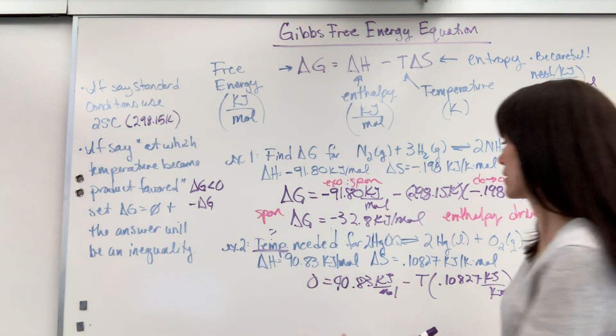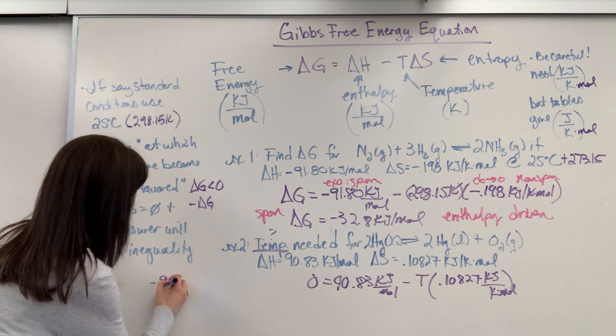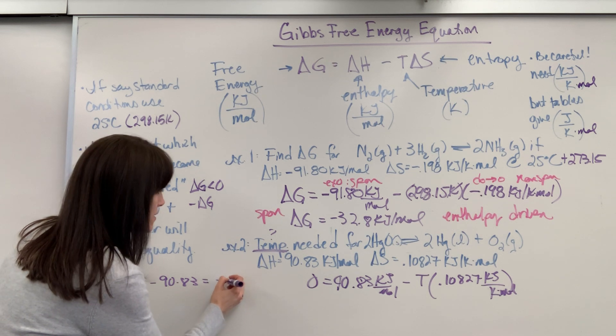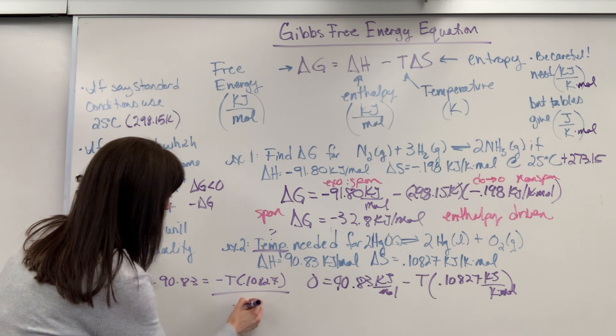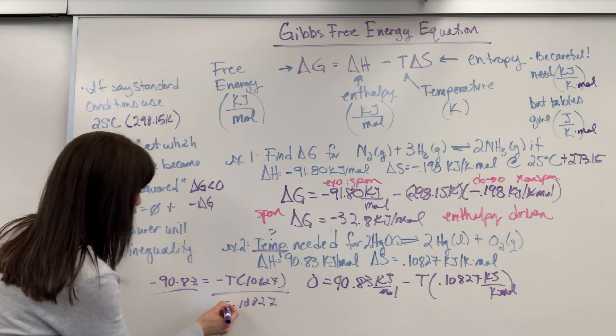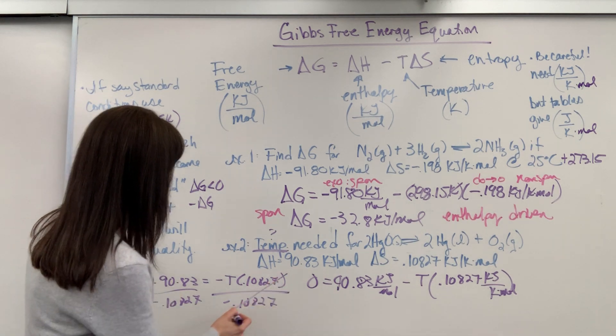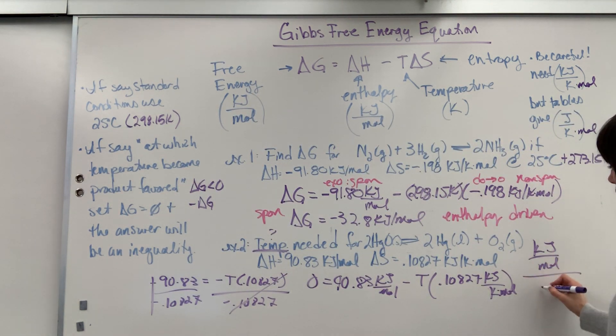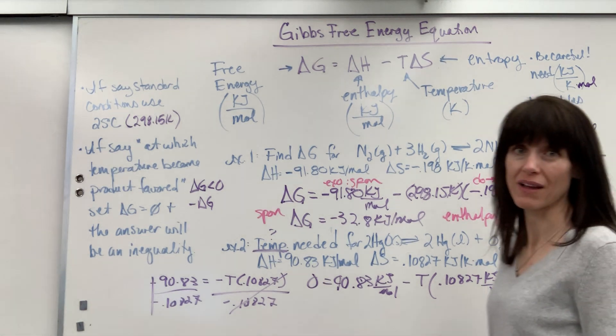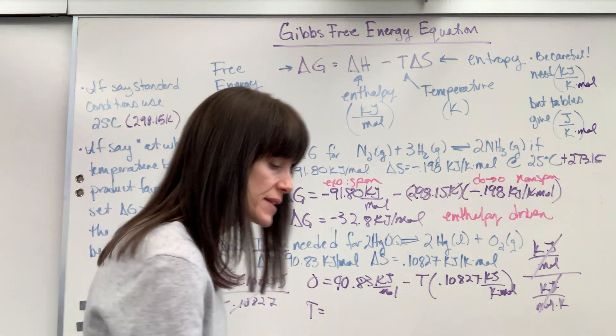So if we do this math, I'm going to divide this over. So if we divide it over, we will end up with negative 90.83 equals negative T times 0.10827. And notice when I divide by negative 0.10827, the negatives will become positives. This will cancel out. Notice I'm going to have kilojoule per mole divided by kilojoule per mole times Kelvin. Kilojoule per mole cancels, fraction divided by a fraction. We're going to end up with T as temperature, and the temperature on this is 839 Kelvin.